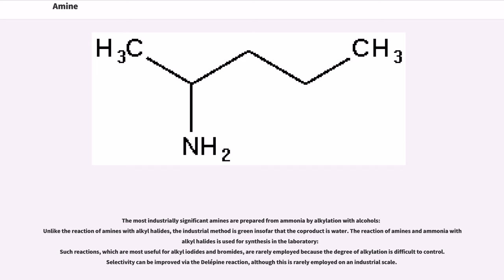The most industrially significant amines are prepared from ammonia by alkylation with alcohols. Unlike the reaction of amines with alkyl halides, the industrial method is green insofar that the co-product is water. The reaction of amines and ammonia with alkyl halides is used for synthesis in the laboratory. Such reactions, which are most useful for alkyl iodides and bromides, are rarely employed because the degree of alkylation is difficult to control. Selectivity can be improved via the Delépine reaction, although this is rarely employed on an industrial scale.